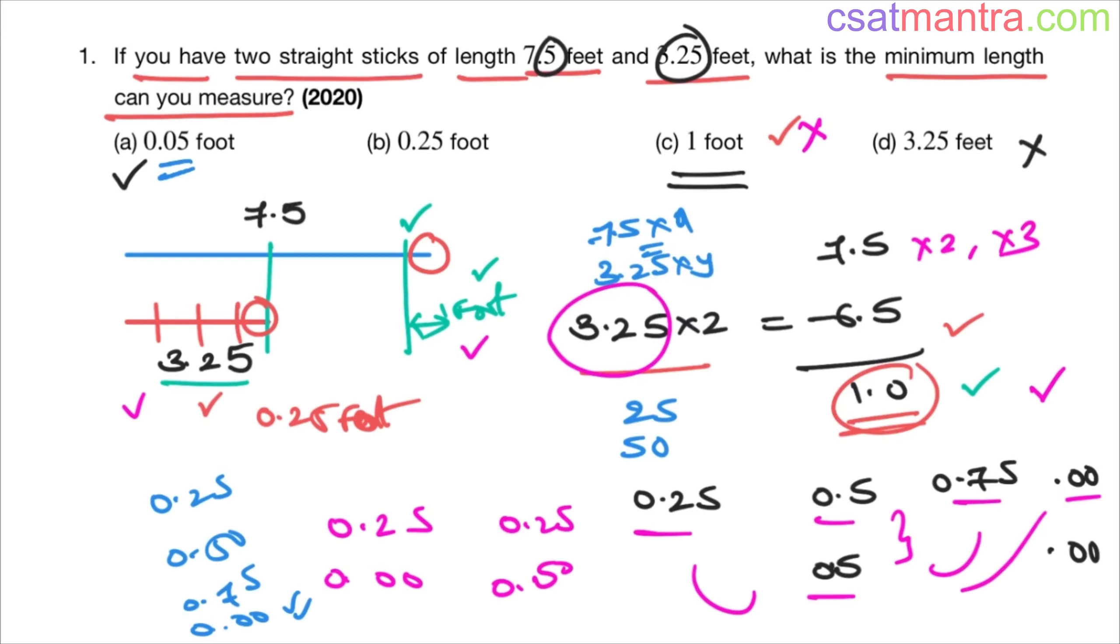7.5 into x and 3.25 into y, they both can be same, in that case the difference is 0, but this is not we wanted. We want to measure some length. So the difference can be 0.25 or 0.5 or 0.75. So the minimum length we can measure is 0.25.